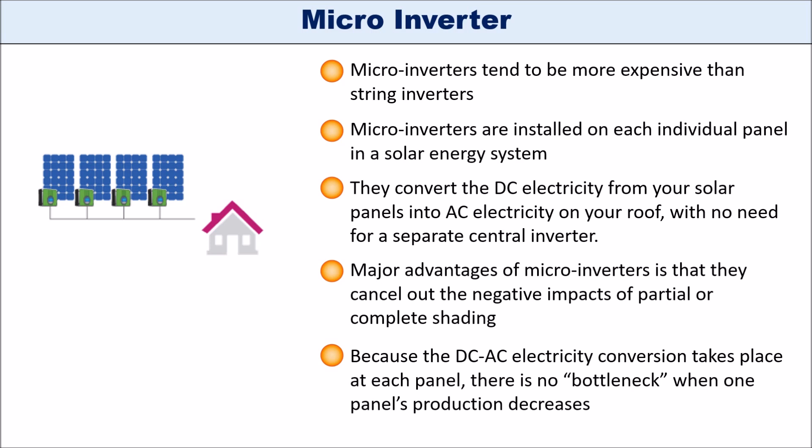If you have say 10 panels and three are shaded, the other seven are still producing at full capacity — as opposed to string inverters where if three out of ten were shaded, the whole system output goes down. With micro inverters, the three shaded panels produce less while the seven unshaded ones produce at full output, giving you more overall output. The drawback is they tend to be more expensive since you're placing an inverter at every panel instead of one central inverter.